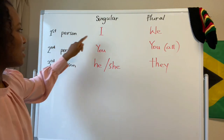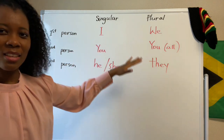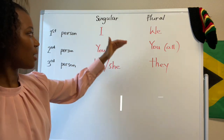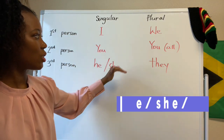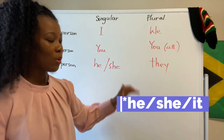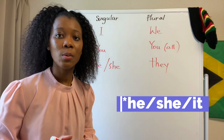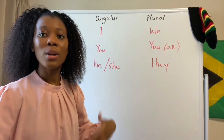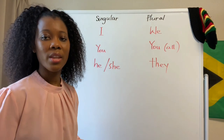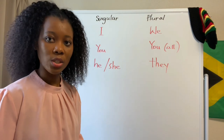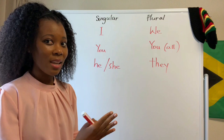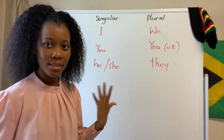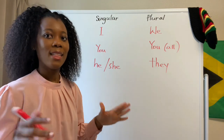This is what the English personal pronoun chart looks like, so this might be familiar to you: I, you, he, she, we, you all, they. Now we're going to look at this in the Rastafarian or the Iyaric language — what do they say, and what do they call themselves?